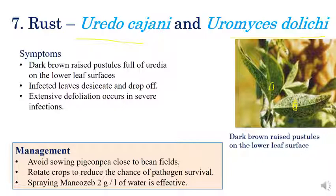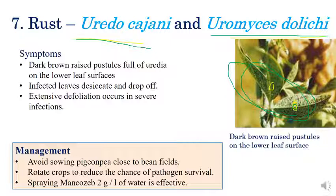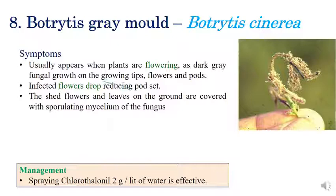Rust is caused by Uredo cajani or Uromyces dolichi. Dark brown raised pustules can be seen on the leaf. If magnified, the pustules are clearly visible. In later stages, uredinia formation can be seen on the lower leaf surface, and the leaves become desiccated and drop off. For management: avoid sowing pigeon pea close to beans; practice crop rotation; spray mancozeb at 2 grams per liter of water for effective control.